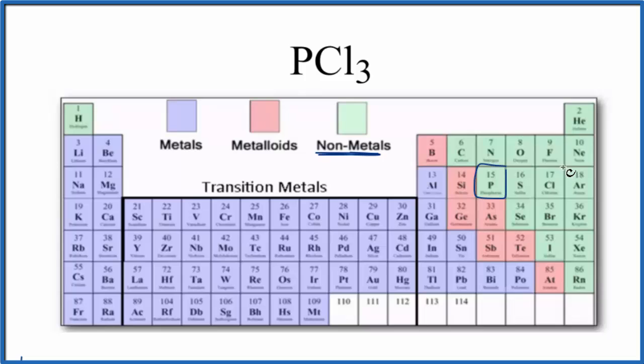And then chlorine over here, that's a non-metal as well. So when we have non-metals bonded together, that means we have a covalent compound. So PCl3 is a covalent compound. It's also called a molecular compound.